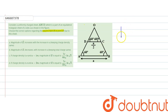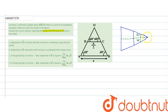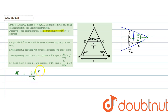Let us consider the diagram like this. From the apex, consider x as a general distance where we have taken a strip of thickness dx. The electric field dE due to this segment at point O will be k·λ/r · (sin θ₁ + sin θ₂), because this strip behaves like a finite line charge.